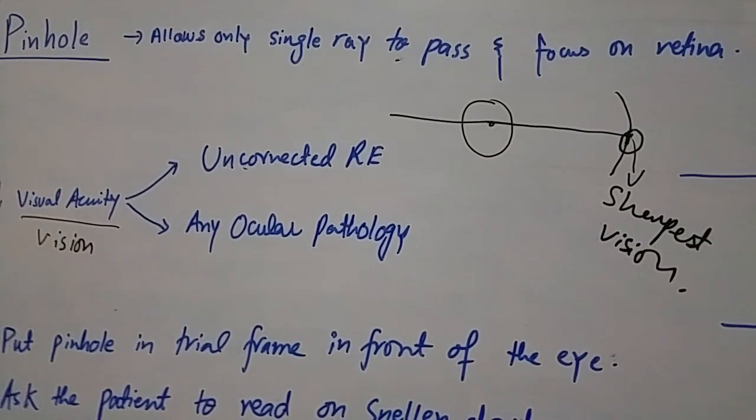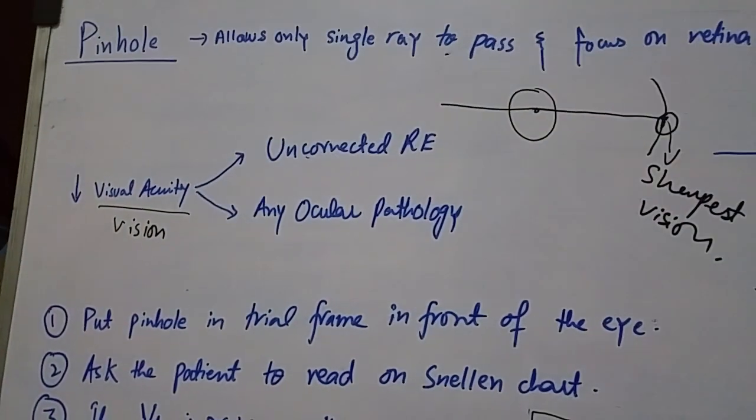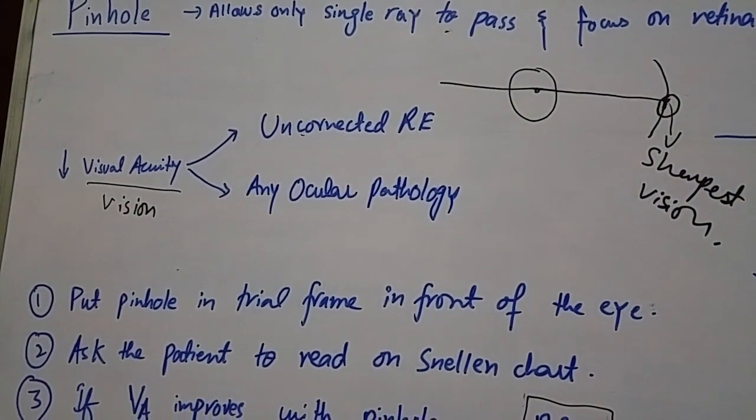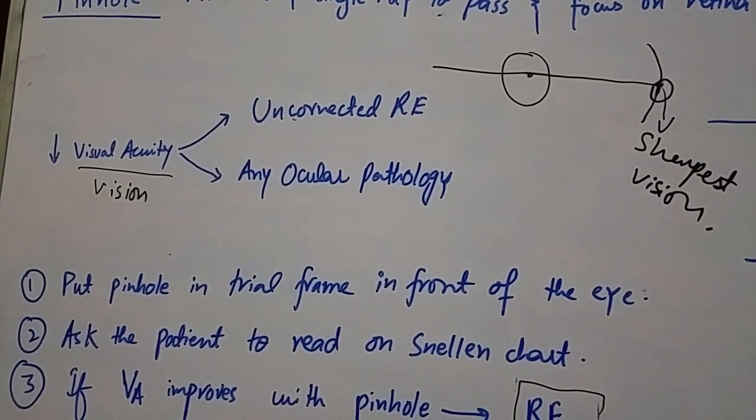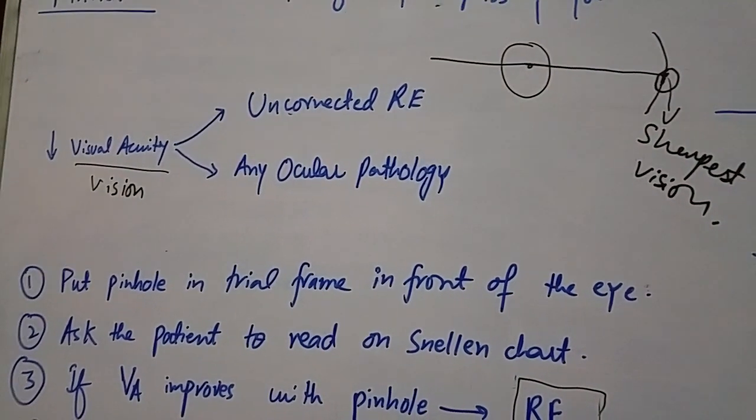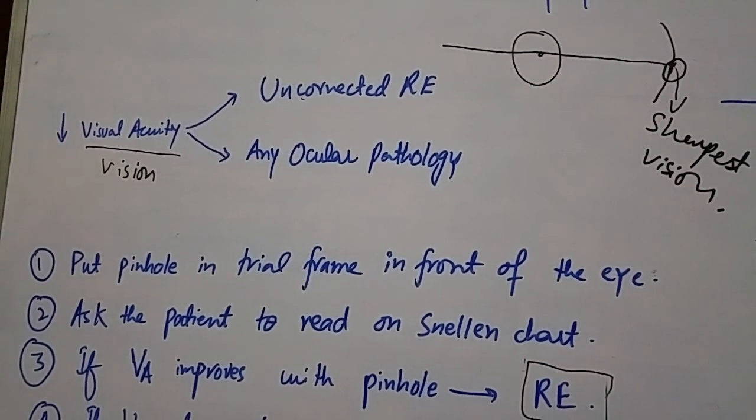So this is the use of pinhole in ophthalmology and it helps us to decide whether decreased visual acuity is due to uncorrected refractive error or any ocular pathology.